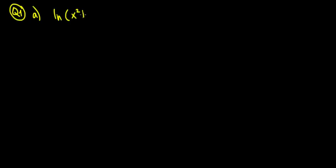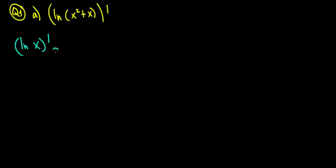In part a, we have the derivative of ln of (x squared plus x), all of it. Before we go on, let's write the basic formula: the derivative of ln(x) equals 1 over x. Now, we don't have just ln of x — we have ln of (x squared plus x), which means the whole thing is an expression, a function of x.